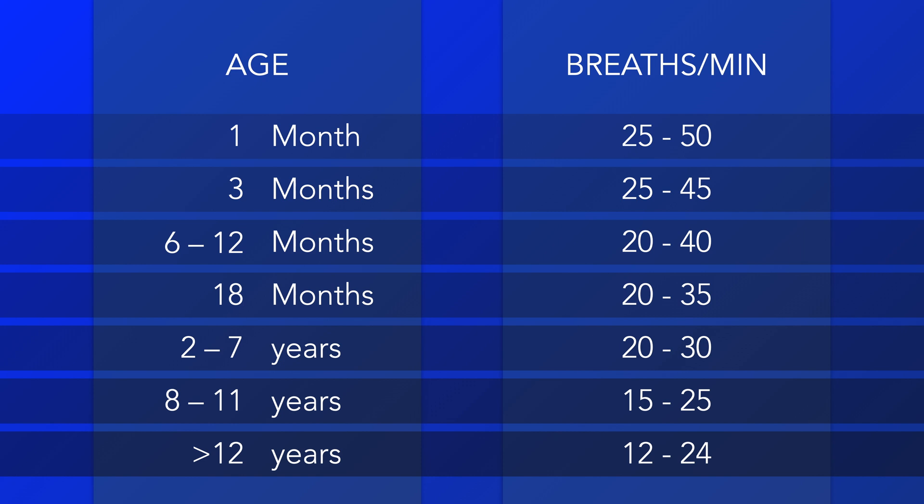A long set of parameters can be difficult to recall, but max and min values are often provided on observation charts, along with visual cues such as green, yellow, or red shading, which can be helpful for those with less experience.